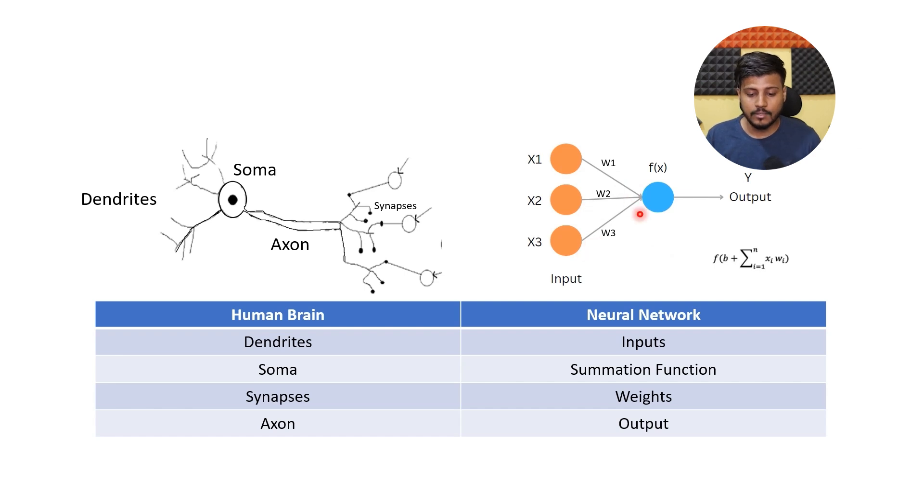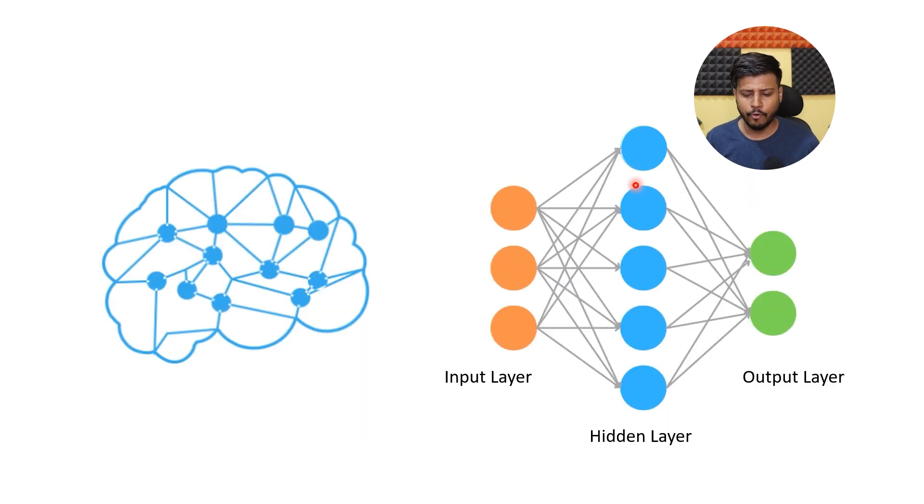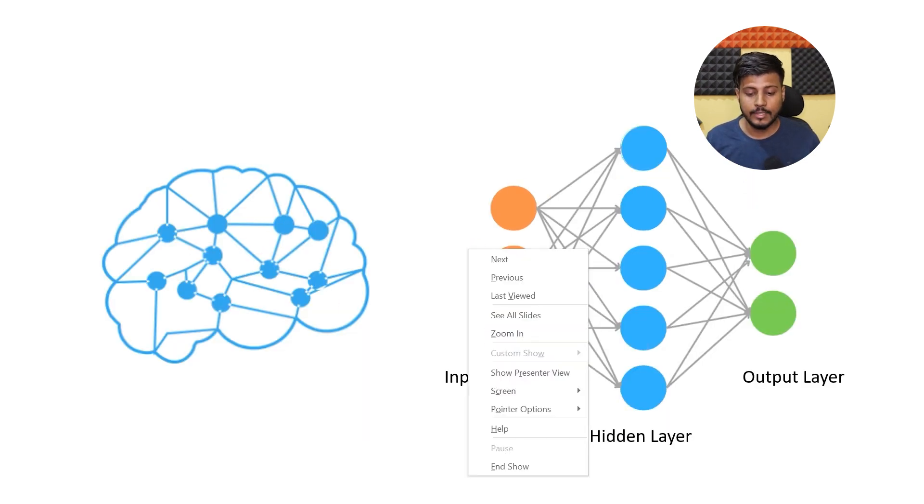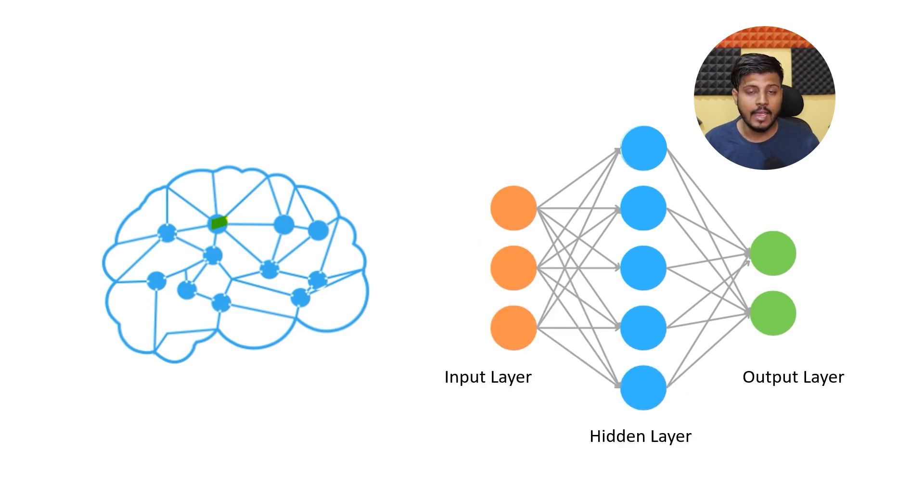So as the signals travel through the brain, they reach different regions or different clusters of neurons, also known as nuclei. In a similar way, in Neural Network, there are layers of artificial neurons that can be seen as analogous to the nuclei. These layers perform specific computations and process the information.